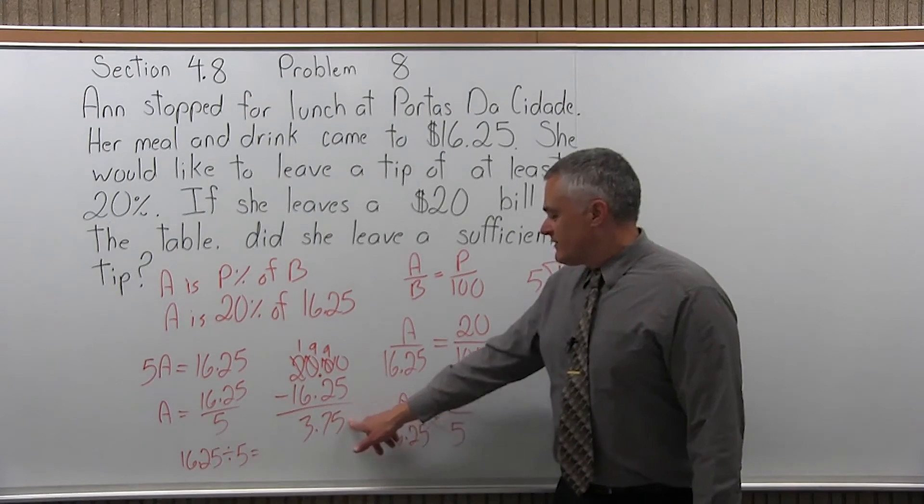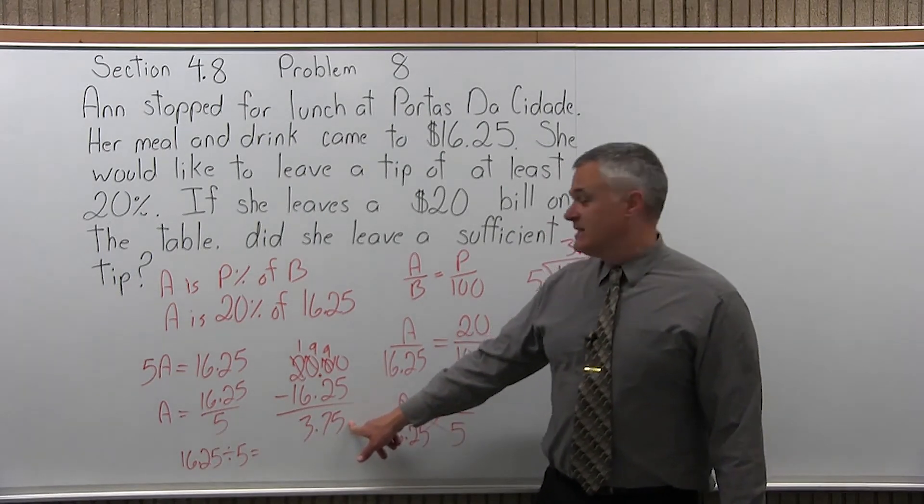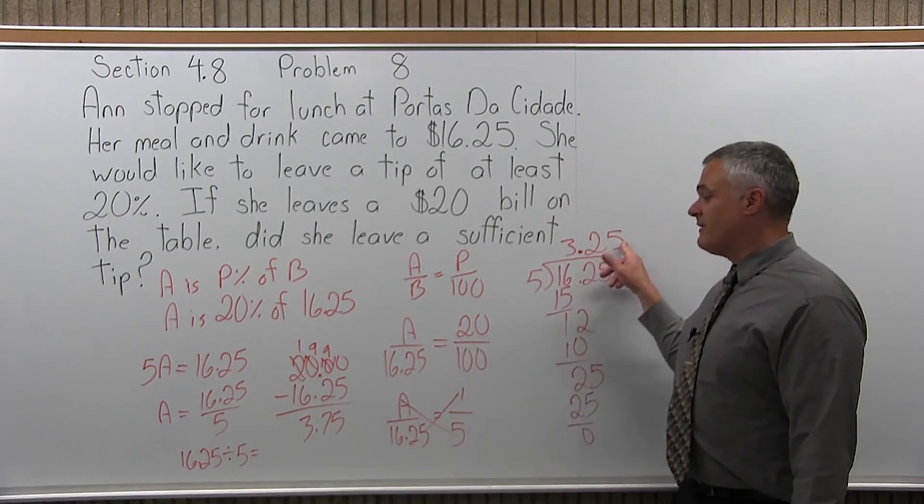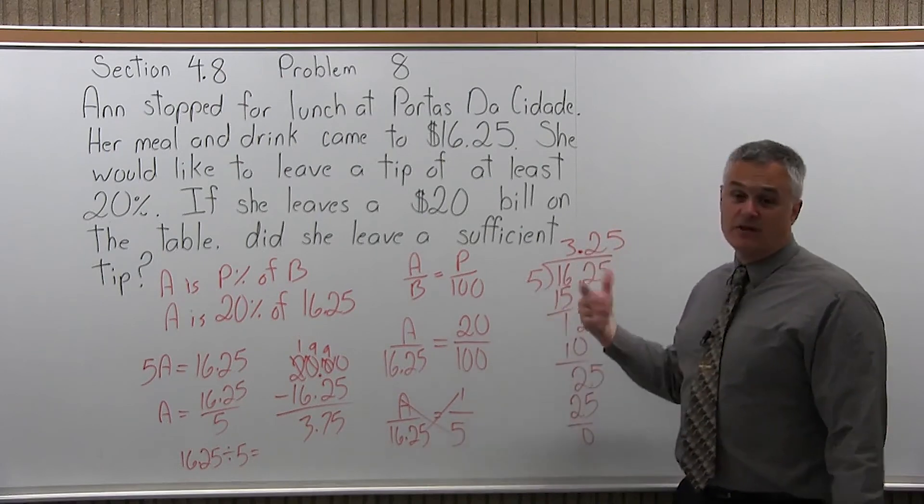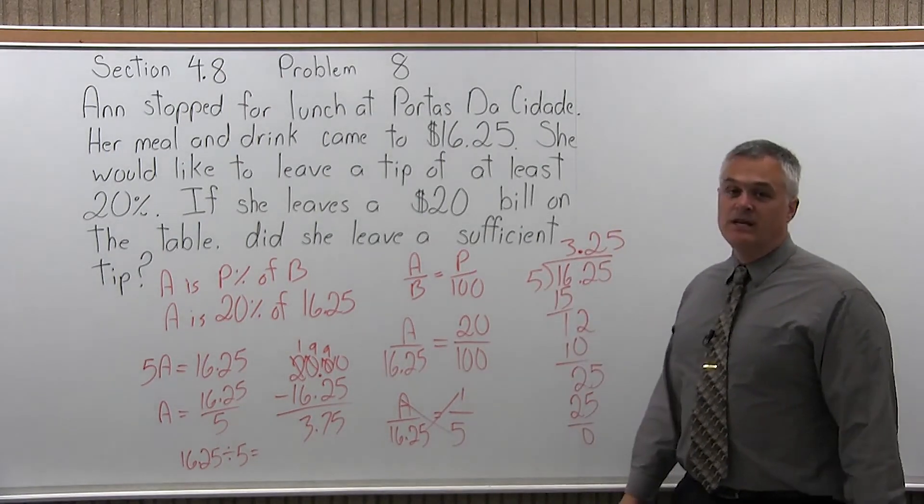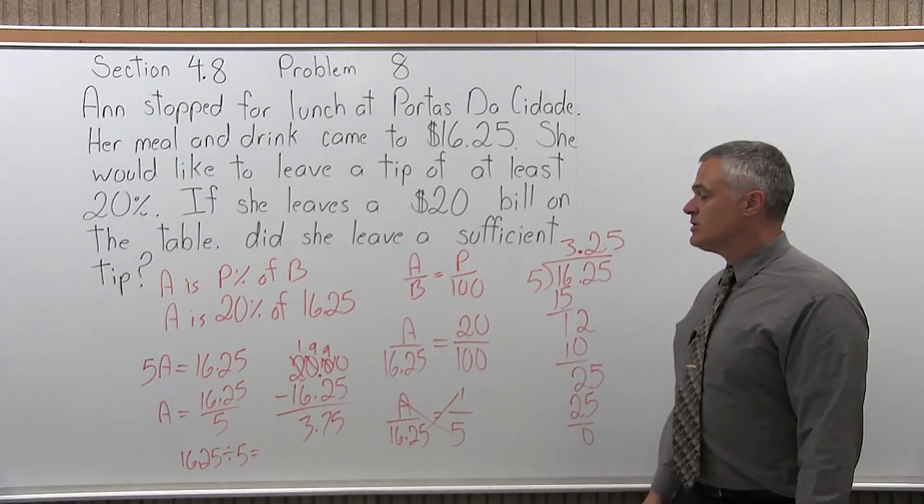So, what it turns out is Ann left a tip of $3.75 and she wanted to leave at least $3.25. So, she did $3.25 and a little more, an extra $0.50. So, it is a little more than 20%, which is good.